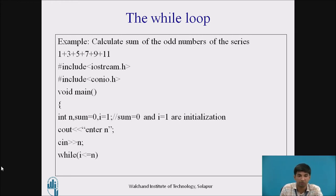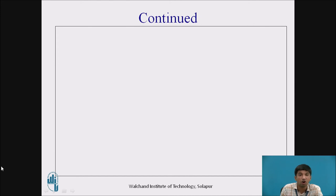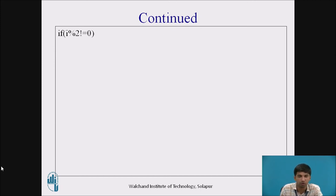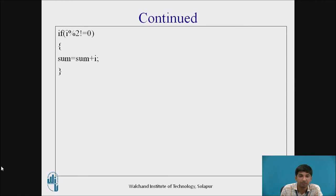Now while i is less than or equal to n: i value is 1 which is less than or equal to n = 11, so 1 ≤ 11 is a true condition. It then checks whether the number is odd or even. If i modulus 2 is not equal to 0, it is true — so it enters the loop and calculates sum = sum + i, that is 0 + 1 = 1. Afterwards the value is incremented to 2.